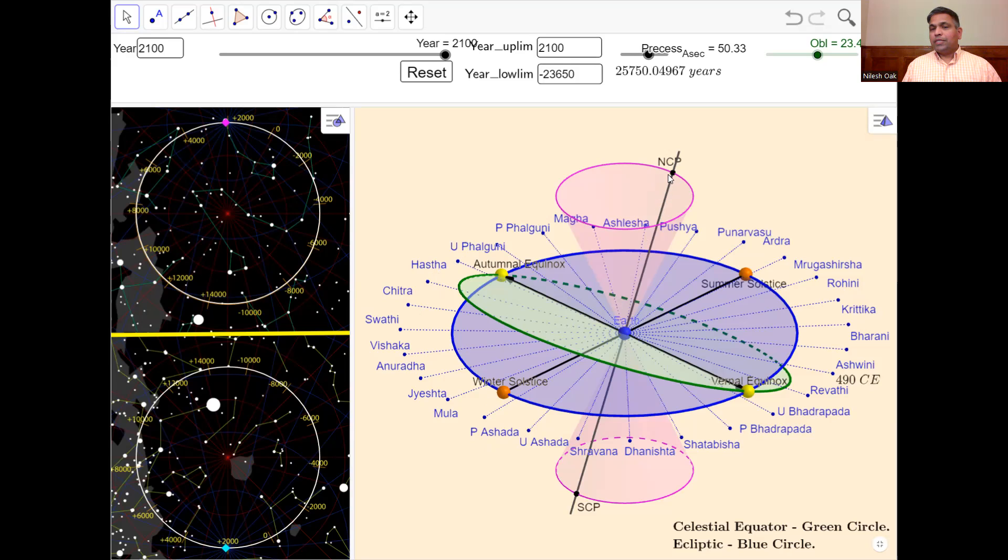And if you notice this point of NCP, North Celestial Point, where Earth's axis is pointing to in our times, that is very close to a star in the northern hemisphere called Polaris, and therefore Polaris is our current pole star in the northern hemisphere.